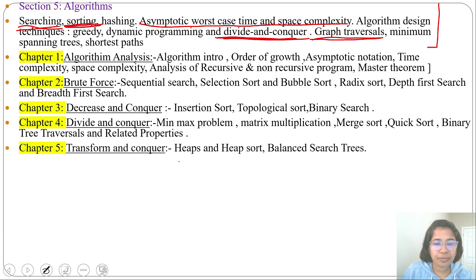Next, Chapter 5: Transform and Conquer. We are transforming into another form and we are trying to solve. Like in case of heap and heap sort, when array is given we are transforming into heap then we are sorting. Heap and heap sort comes under sorting, then balanced search trees that comes under data structure.